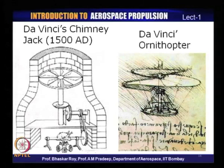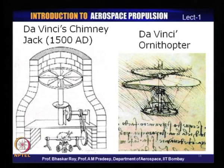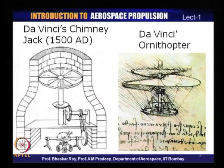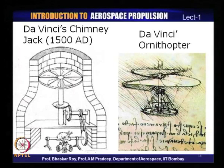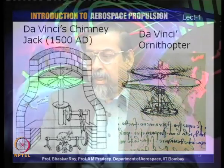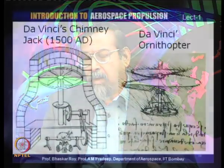His idea was that you can create a small platform on which a human being can sit or lie down, and it would have something like a helicopter — what we call a helicopter today — which would have a vertical motion. Something like a screw motion through the air, and the whole device would rise up. This was his concept of an ornithopter, which he never actually made — he only conceptualized the whole machine.